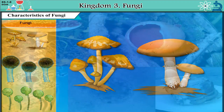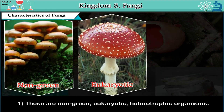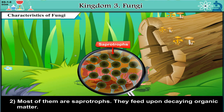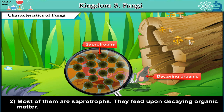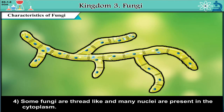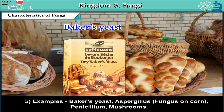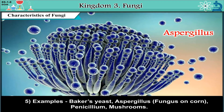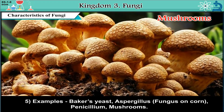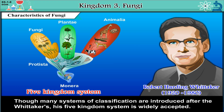Characteristics of Fungi: 1. These are non-green, eukaryotic, heterotrophic organisms. 2. Most of them are saprotrophs — they feed upon decaying organic matter. 3. Their cell wall is made up of a tough and complex sugar called chitin. 4. Some fungi are thread-like and many nuclei are present in the cytoplasm. 5. Examples include Baker's yeast, Aspergillus (fungus on corn), Penicillium, and Mushrooms. Though many systems of classification have been introduced after Whittaker's, his Five Kingdom System is widely accepted.